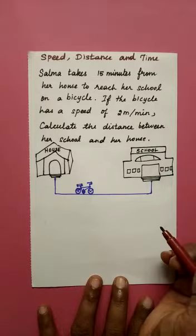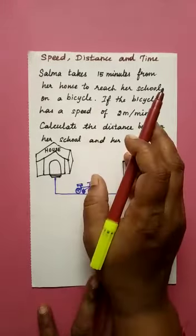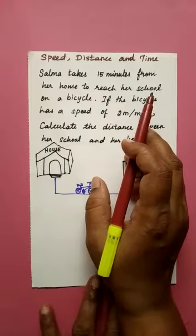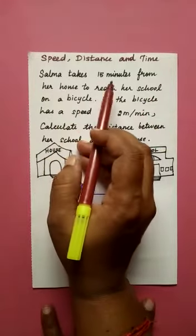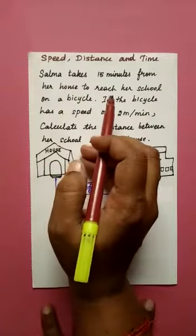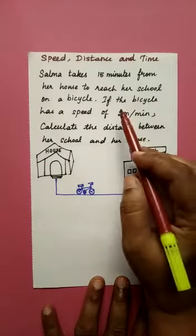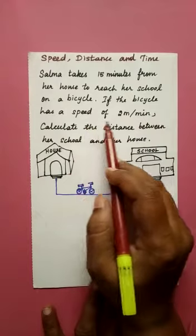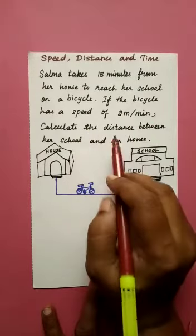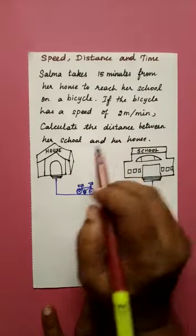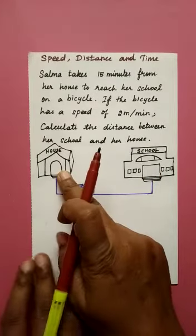In this video, we are going to learn the speed, distance and time calculation. Here is an example. Salma takes 15 minutes from her house to reach her school on a bicycle. If the bicycle has a speed of 2 meter per minute, calculate the distance between her school and her house.